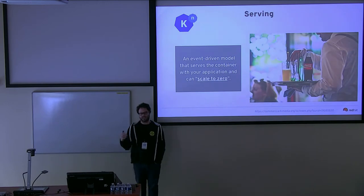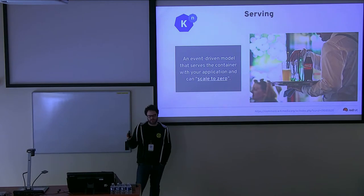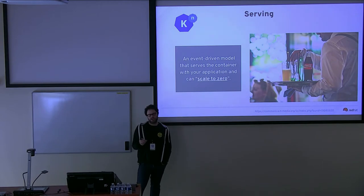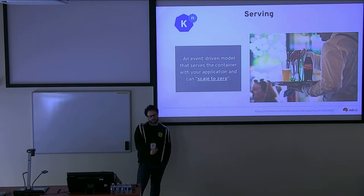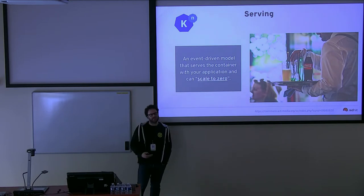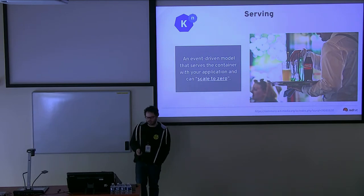Then we have Serving, which is probably the most important thing in the whole architecture. The idea is an architecture that can serve events to your source code and that has the ability to scale to zero. This is very important because all the point about serverless is the ability to spike — to have zero instances of your code when it's not needed, and then when an event comes, scale up to the number of copies of your container that you need. Probably the most important feature of serverless is the ability to scale to zero and then scale up to the resources needed to complete your task. Serving is a very important pillar in the K-native architecture.